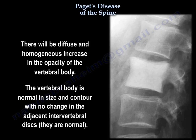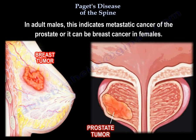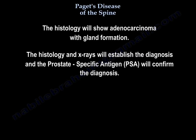The intervertebral discs are normal. In adult males, this indicates metastatic cancer of the prostate, or it can be breast cancer in females. The histology will show adenocarcinoma with gland formation. The histology and x-rays will establish the diagnosis, and the prostate-specific antigen will confirm the diagnosis.